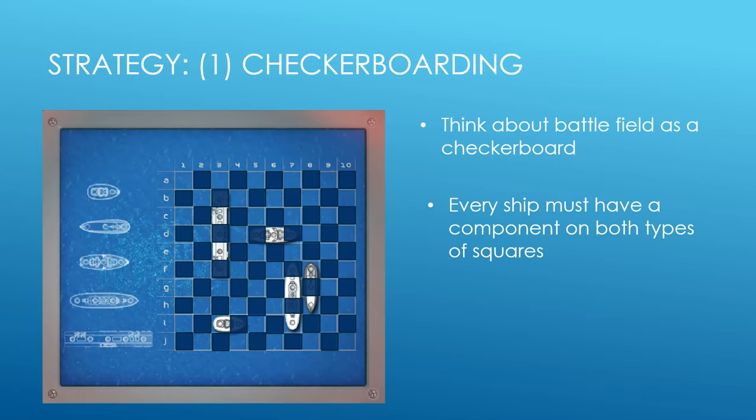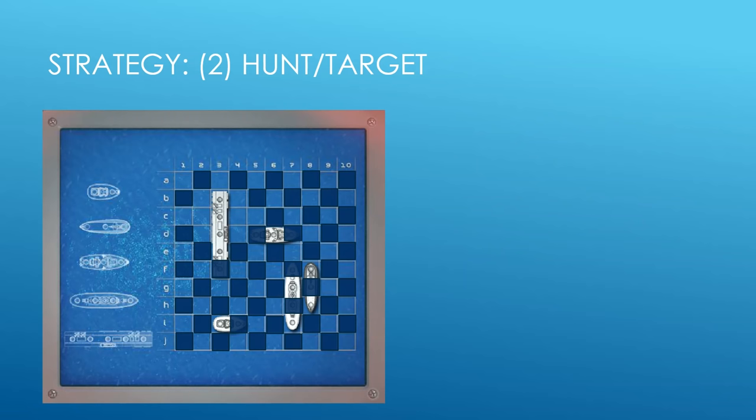However, you might be thinking, 'To destroy a ship entirely, you can't just shoot light or dark squares.' This is covered in the second part of the strategy, called hunt and target. Hunt and target basically means if you hit a ship, you should open up the surrounding tiles no matter if they are light or dark, and fire at all of them. You're never going to fire diagonally because ships can only lie horizontally or vertically.